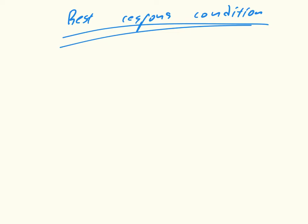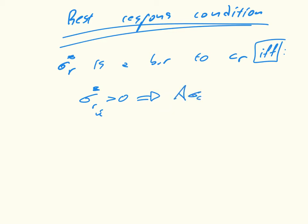The theorem simply says that sigma star R is a best response to sigma R if and only if sigma star R i, the i-th element of sigma R star, is positive, which implies that A sigma C T to the i is equal to the max of A sigma C T of all possible ones.